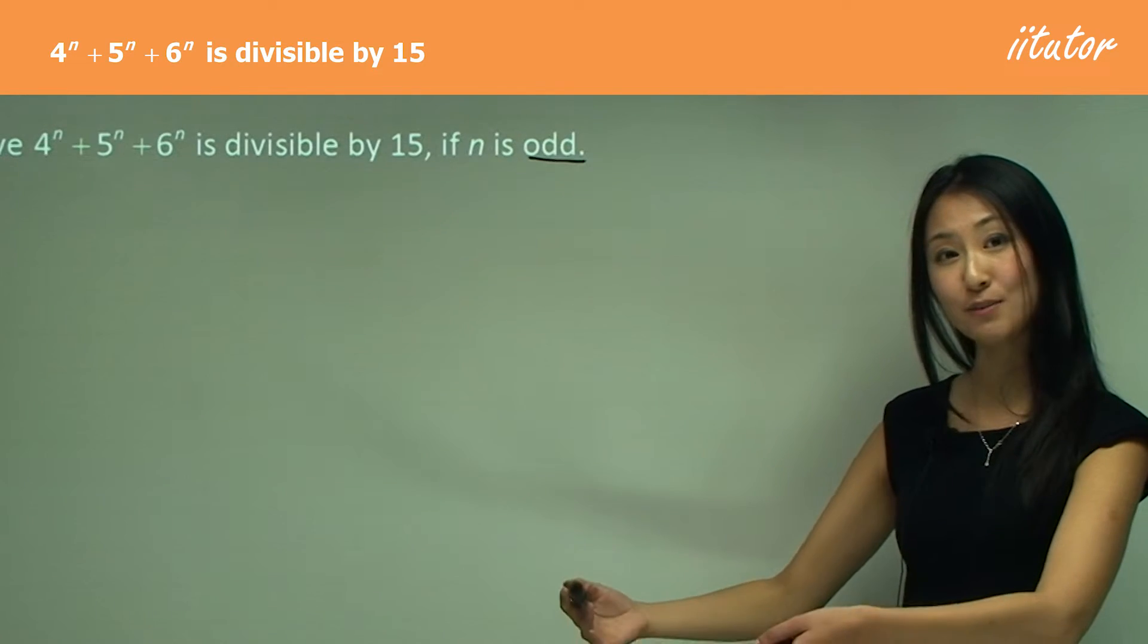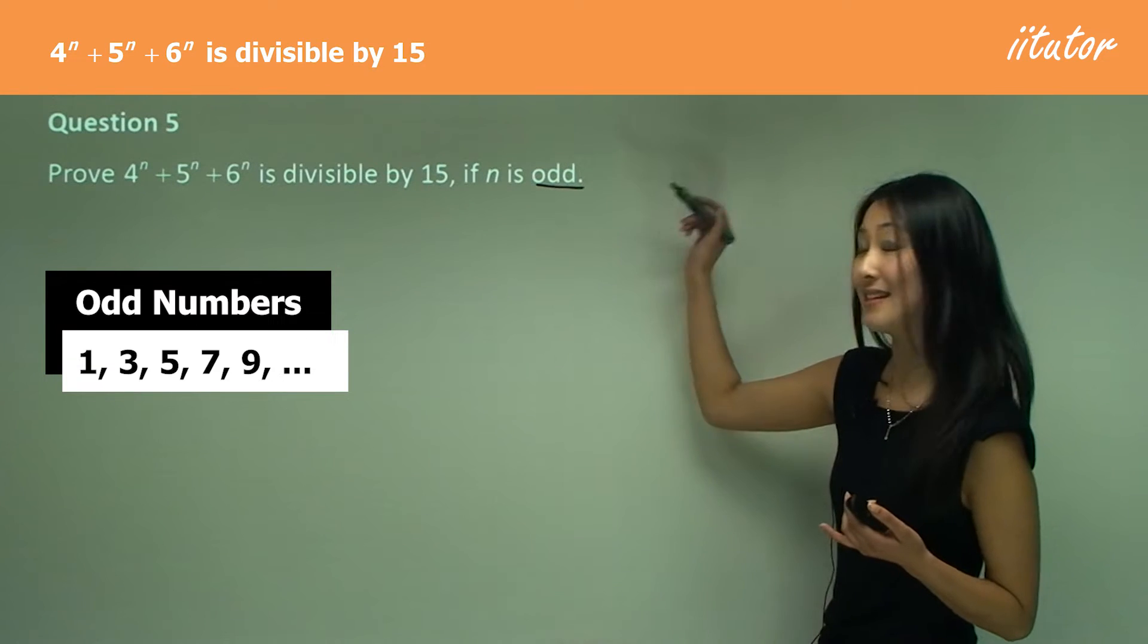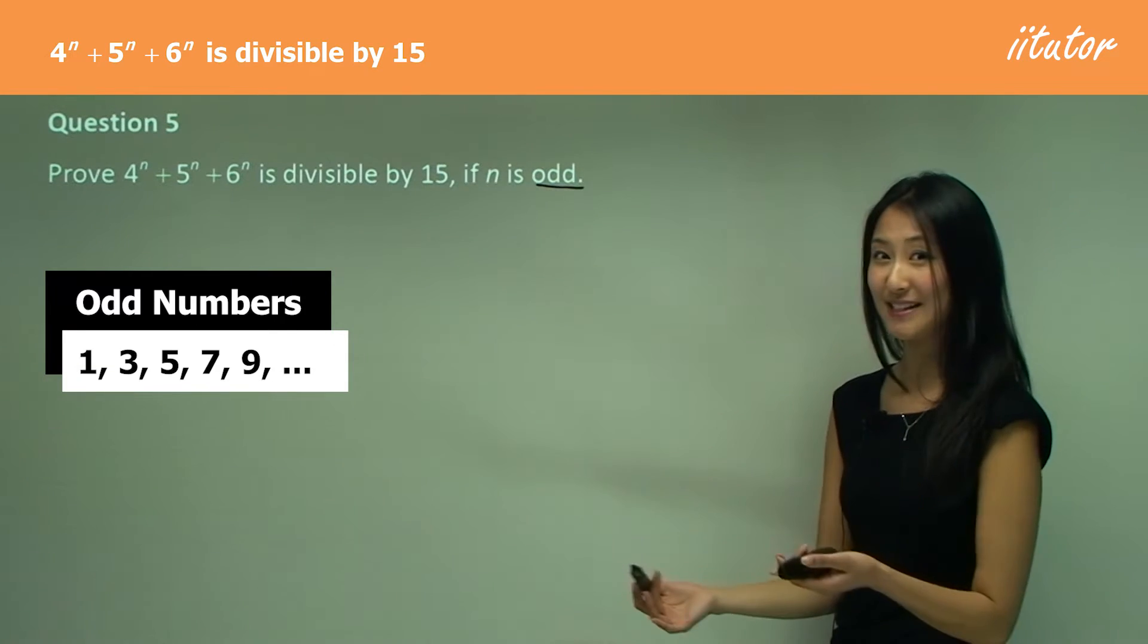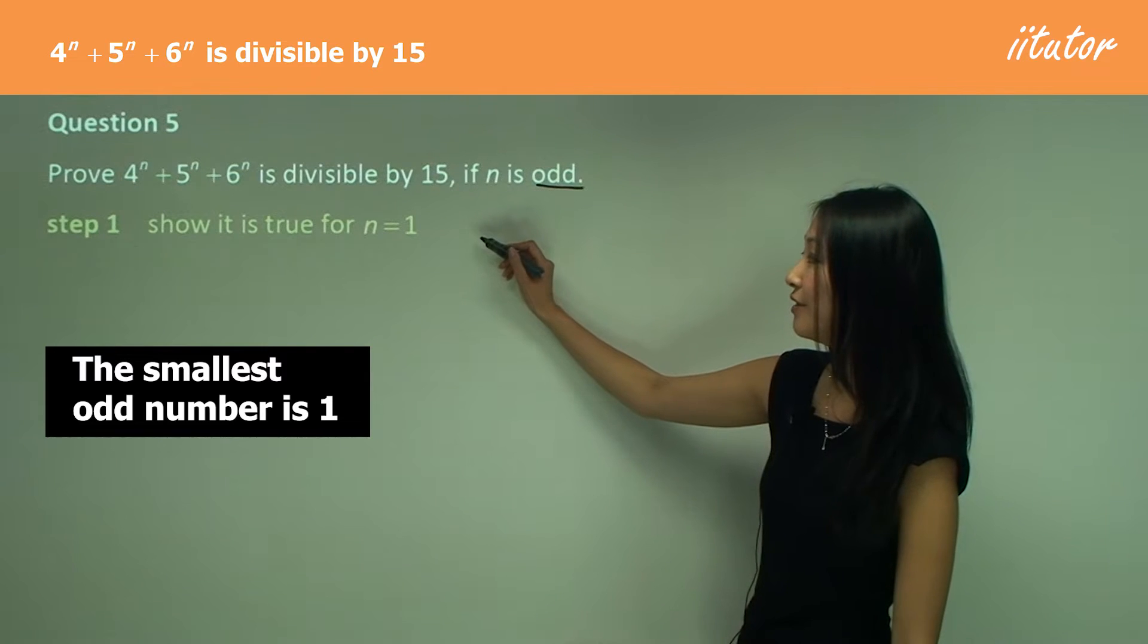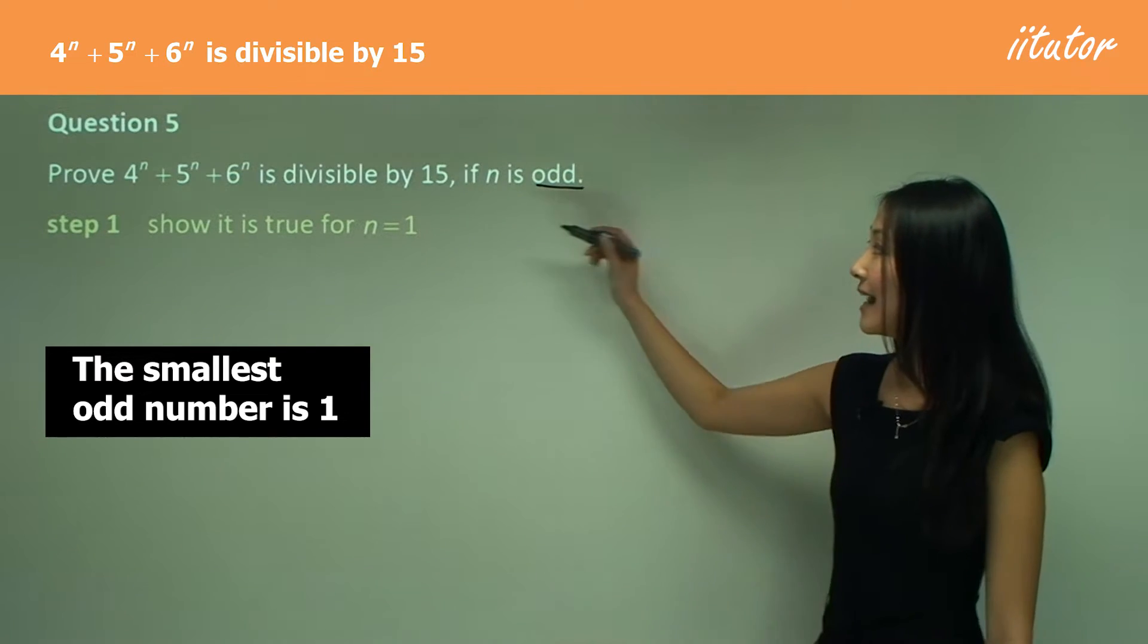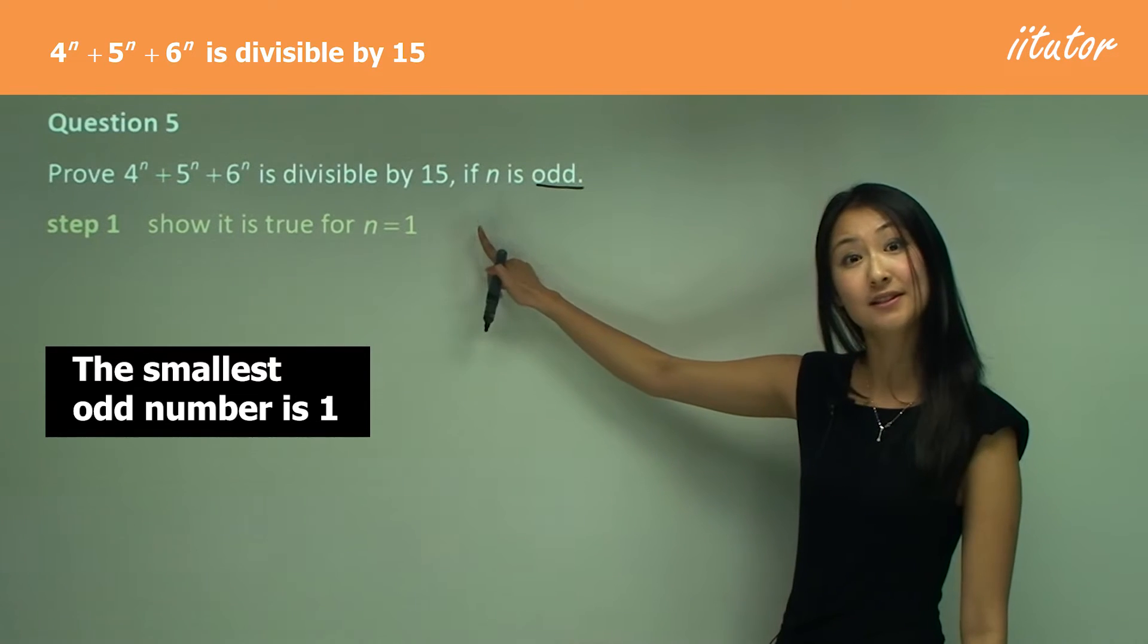Remember how we did the even questions before? We were increasing more than one. Same thing applies here for odd. We want to be increasing more than one as well. Step one is to show it's true for the first n value. n can't be zero here because we want an odd number, and one is your smallest odd number.